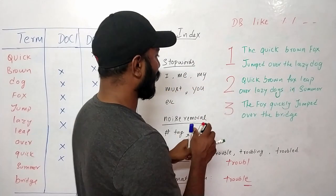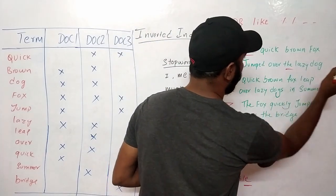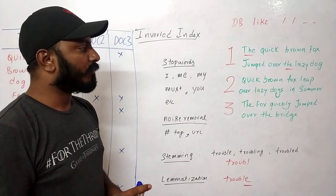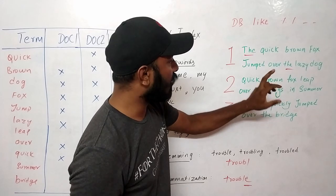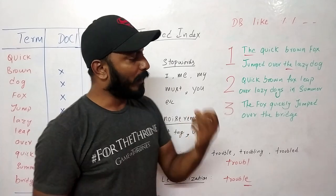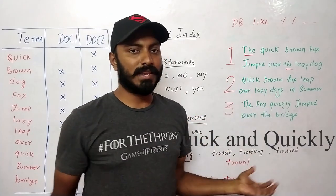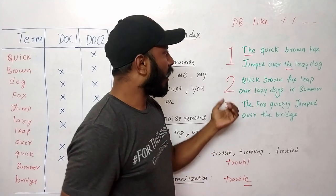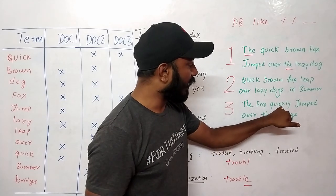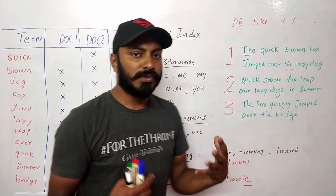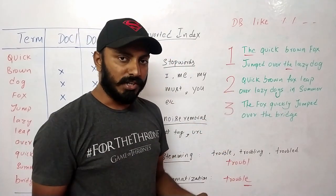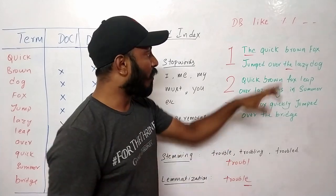After removing stop words, there are still more preprocessing steps required. For example, the words 'quick', 'quick', and 'quickly' — according to their meaning, these three words are the same; only the tense differs. But for a computer, it treats them as different words. For search, we need to consider all three as the same. So we have to do something called stemming and lemmatization.